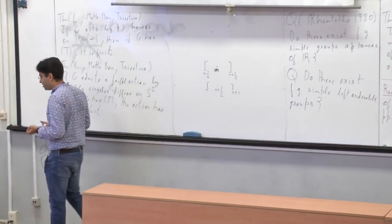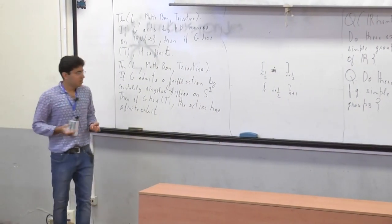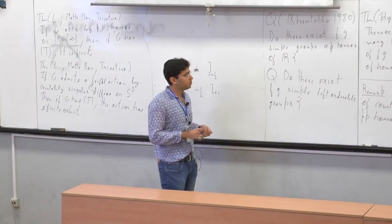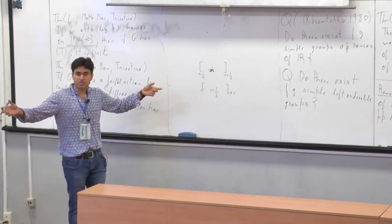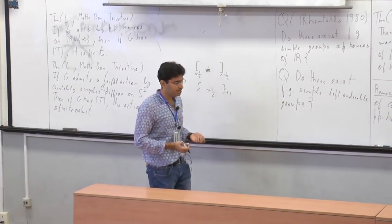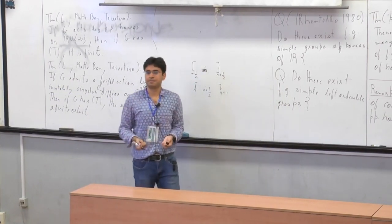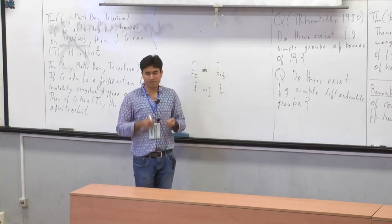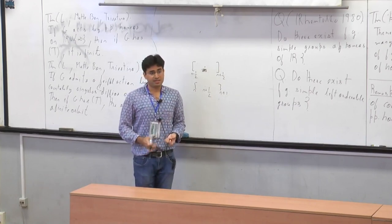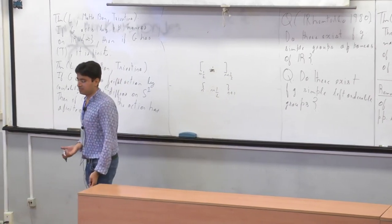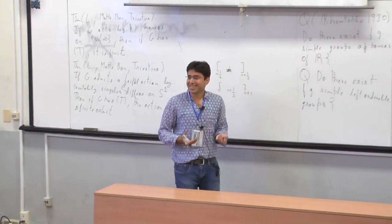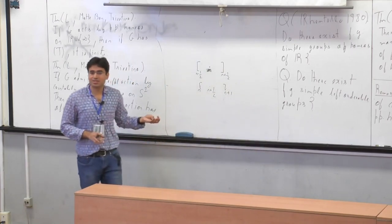The challenge is: how do you kill that center, and even if you kill it, why should the result be simple? That's where the definition of quasi-periodic comes in — you flip various things at various points. One key property is that every element of G_{ρ,α} will fix a point on the real line if ρ is quasi-periodic, and that plays a crucial role in the proof of simplicity.